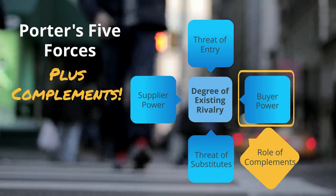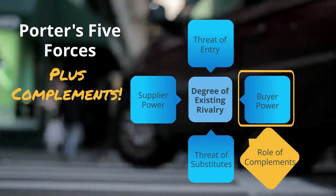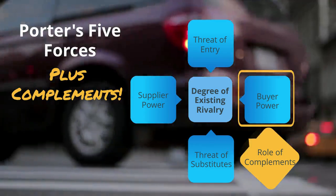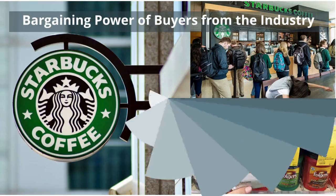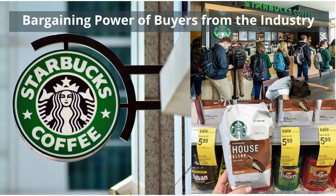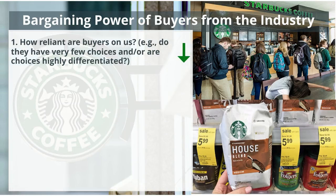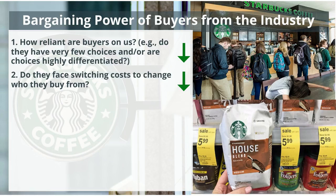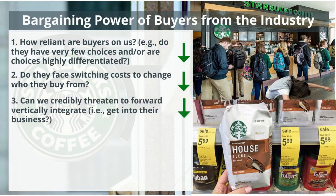We use a similar structure of questions to analyze the bargaining power of buyers from the industry. For example, let's use Starbucks again — now our buyers are individual consumers and grocery stores. We're going to ask how reliant buyers are on us, whether they have very few choices or highly differentiated choices, whether they face switching costs, and whether we can credibly threaten to forward vertically integrate into their business. Each of those things will decrease their bargaining power.